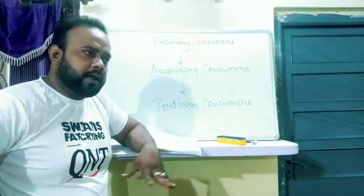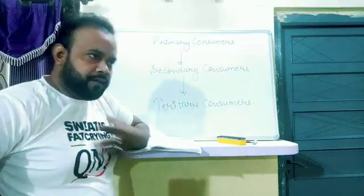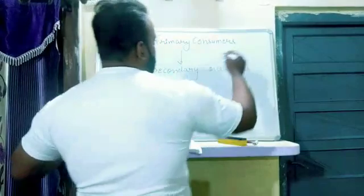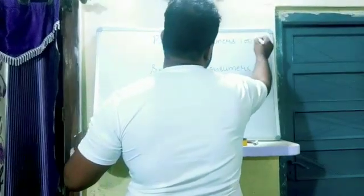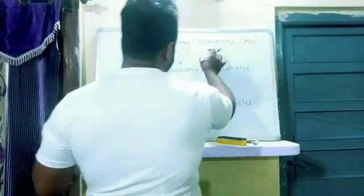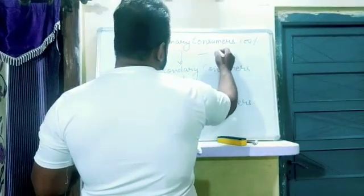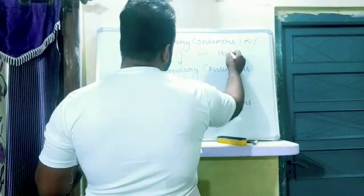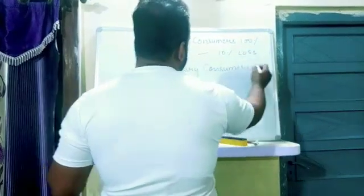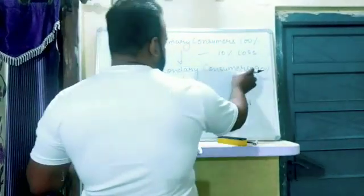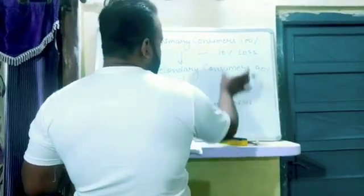We are human beings — from where are we getting the energy? We are getting energy from food. Suppose here 100% energy. The secondary consumer eats and there is a 10% energy loss, so the secondary consumer gets 90% energy.